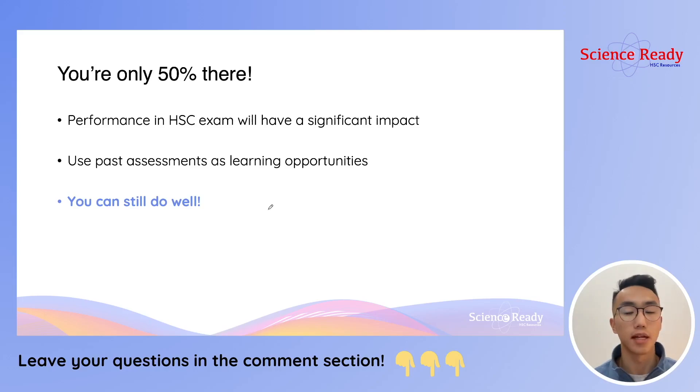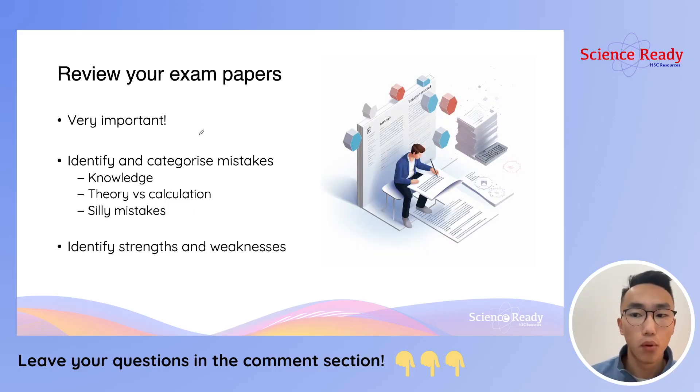So the strategies and study methods that you start implementing between now and the final exam will have a massive impact on your final performance. The most important thing that you can do now is to review your exam papers. What this means is you go through your past school assessments, whether this is your trial exams or the ones before that, identify and categorize all of your mistakes in these exam papers. For each mistake, try to classify them into one of the following main categories.